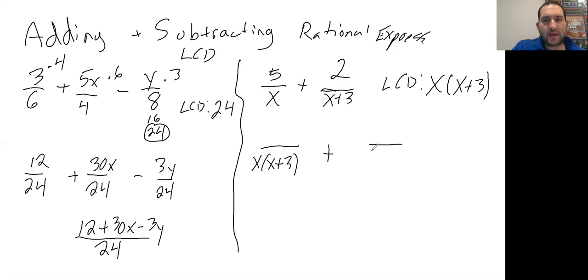x times (x+3) plus x times (x+3), and just cross multiply. This is going to be 5 times (x+3), and this is going to be 2x.